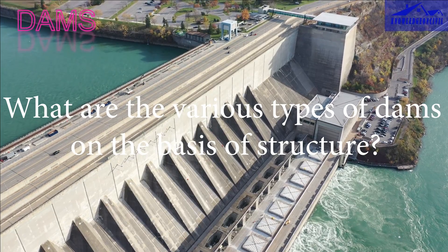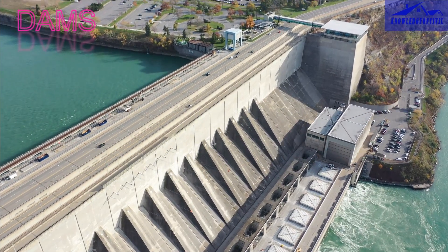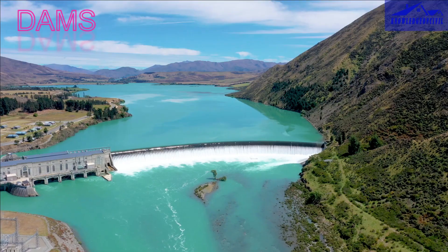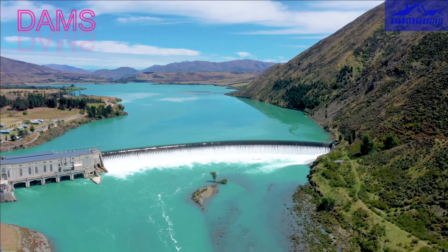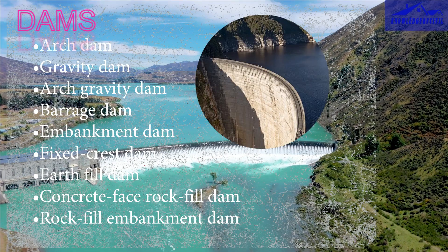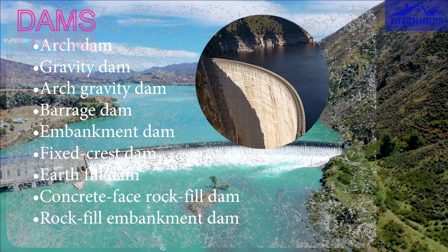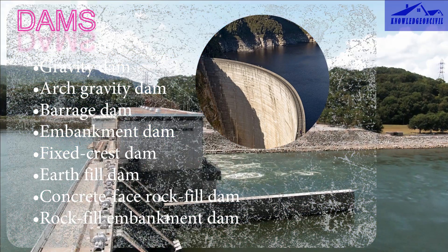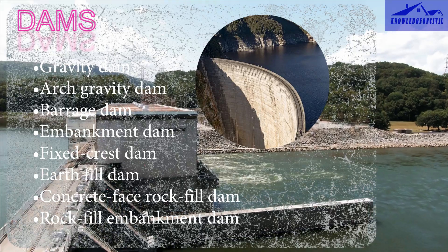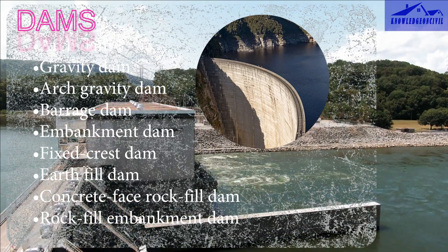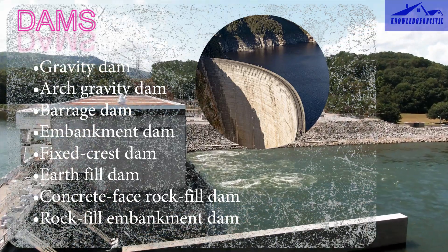What are the various types of dams on the basis of structure? On the basis of structure, dams are of the following types. Arch dams are curved structures that transfer the water load to the abutments, resembling a curved arch. They are typically constructed in narrow canyons where the abutments can support the load.